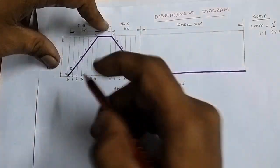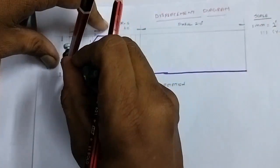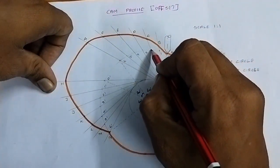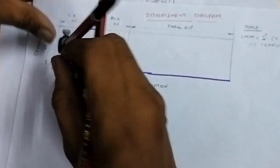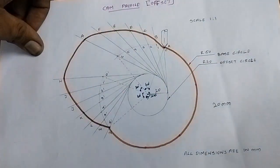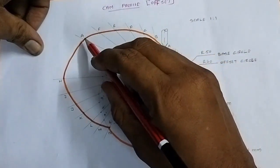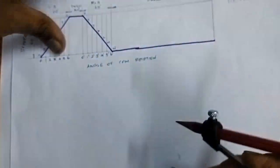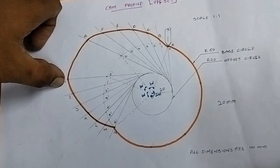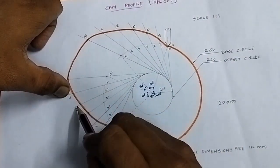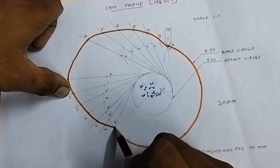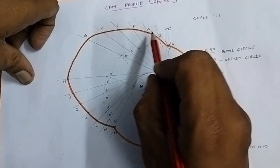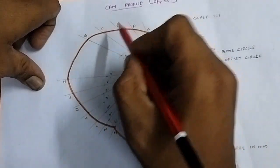For the radial follower, take point 1 as center and measure distance 1B as a tangency line to get point B. Take distance 2 and measure correspondingly to get point C, then 3 as D, 4 as E, 5 as F, 6 as G. Mark point A at the initial position. Connect points A, B, C, D, E, F, G, H with a smooth curve to complete the offset cam profile.